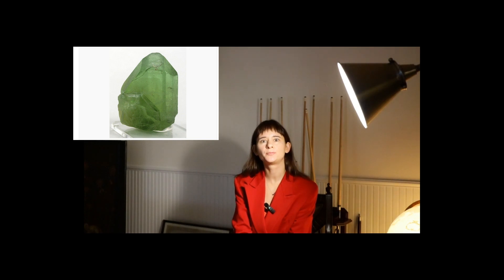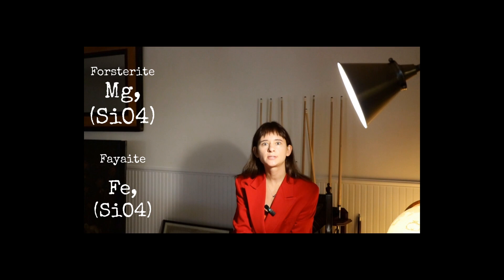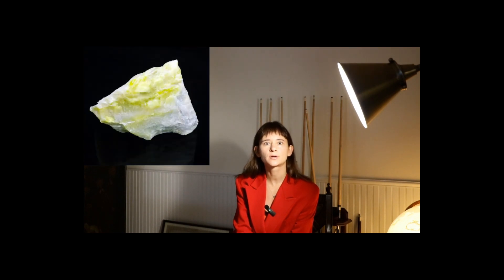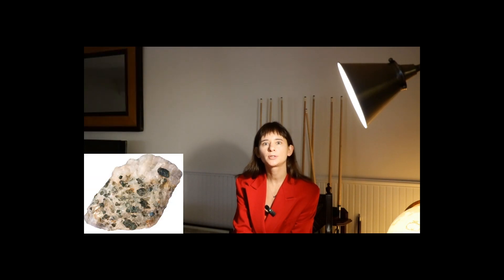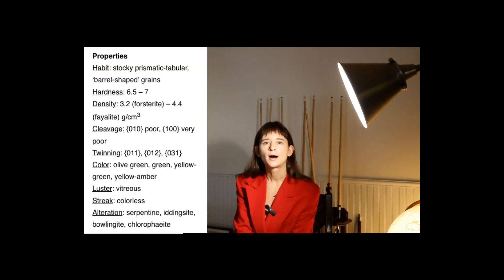Olivine group — this is the group of minerals of variable composition, forming a continuous series of isomorphic mixtures from Forsterite to Fayalite. The magnesium member of the series, Forsterite, is found in marbles and some types of skarns in the form of white or yellow rounded grains and shapeless deposits with a glassy or greasy sheen.